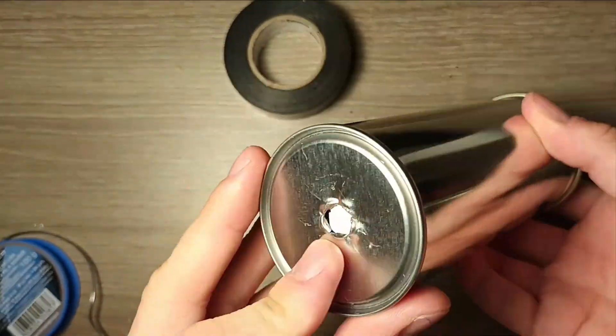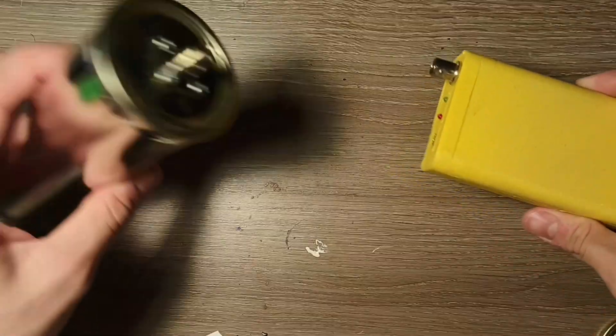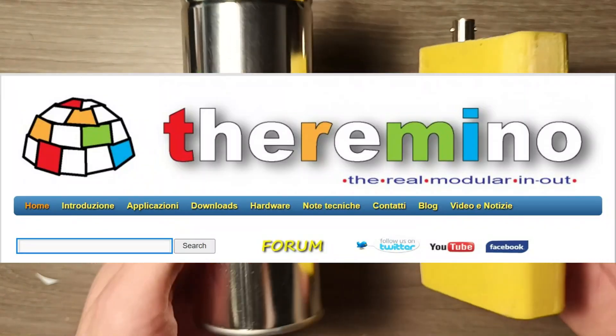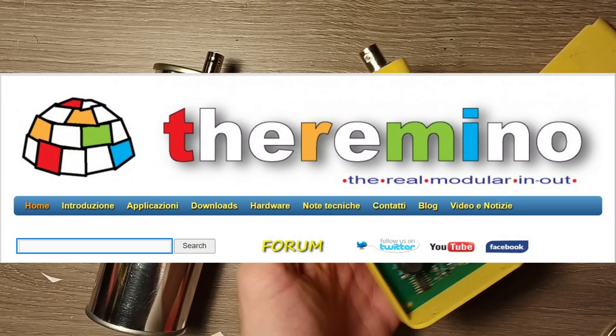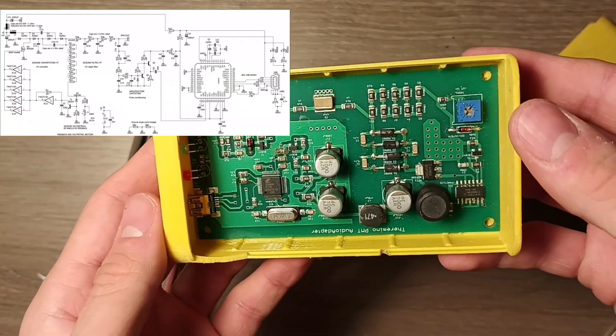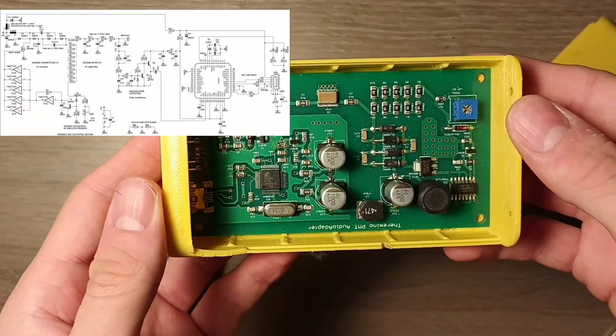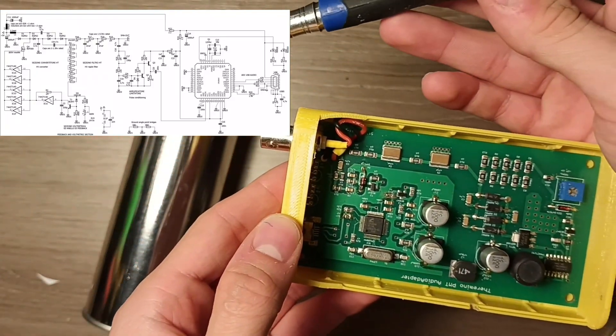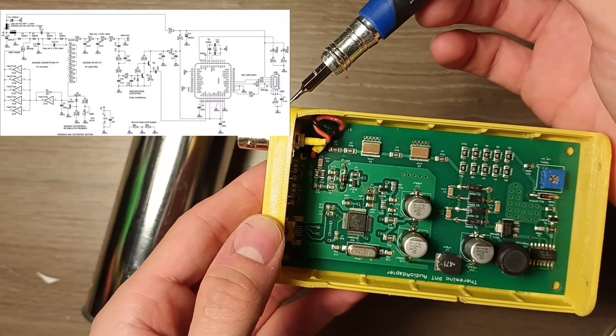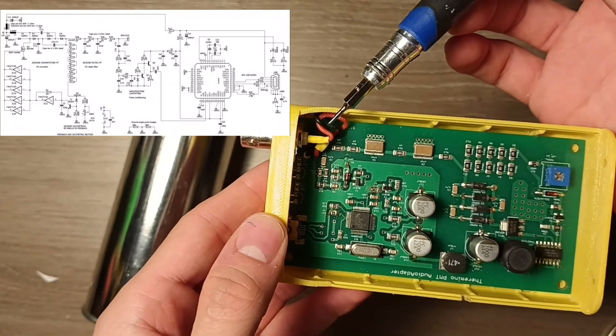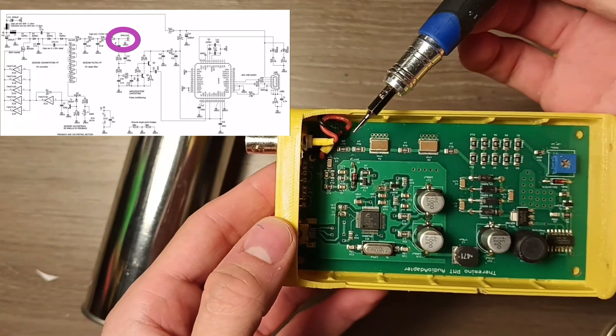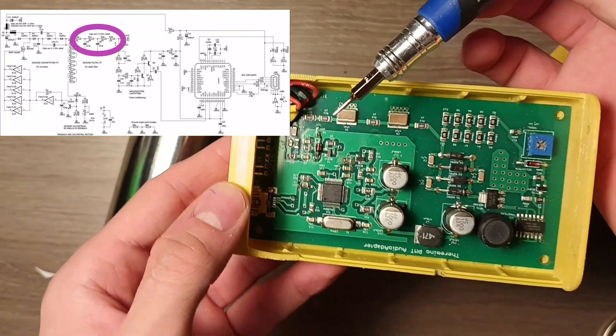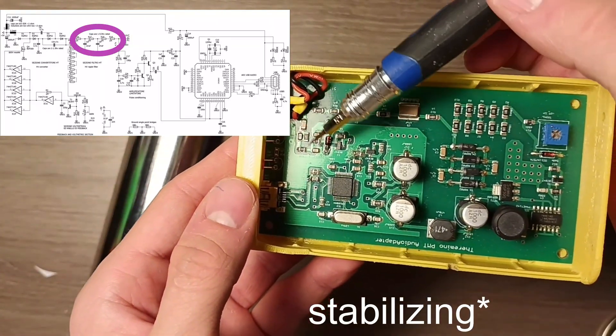The electronics needed to record the spectrum are inside this yellow box. They have been designed by the Theremino Group. It is an open source project so you can find schematics about it online and you can build it yourself. So this is the inside of the circuit. You can see on the left the BNC connector with the high voltage positive on the inside and then the RC filter for rectifying the high voltage generator.